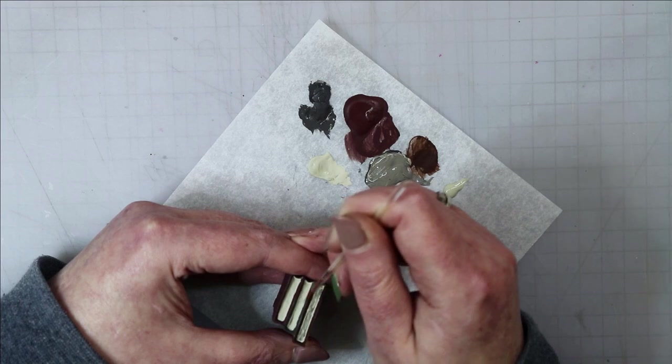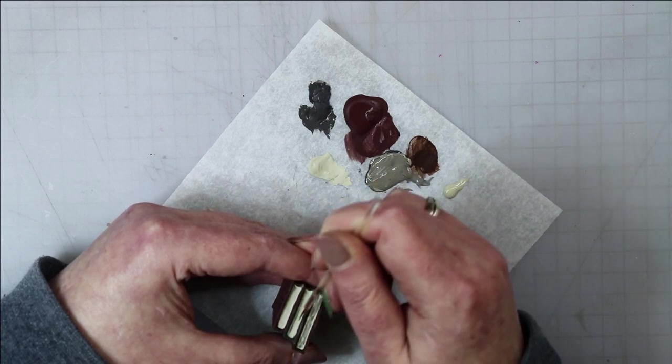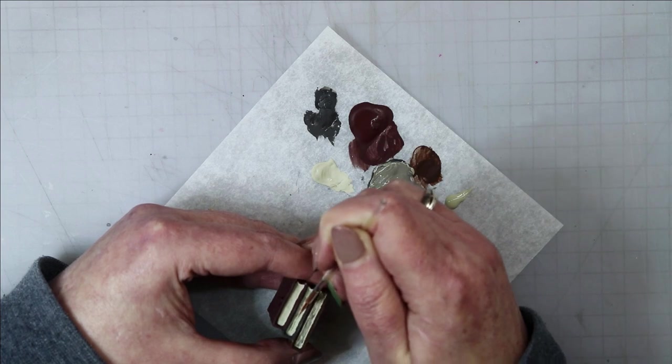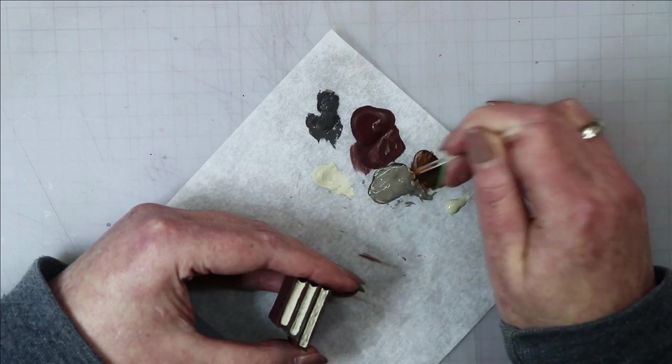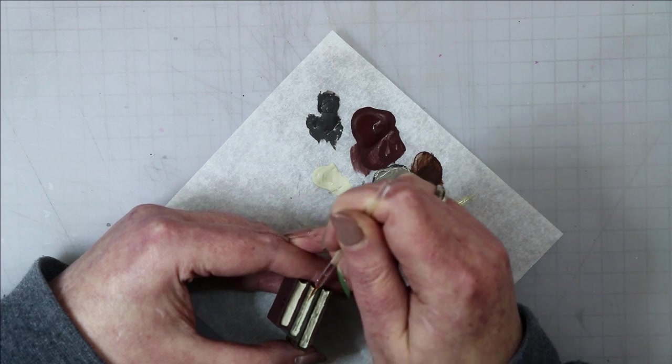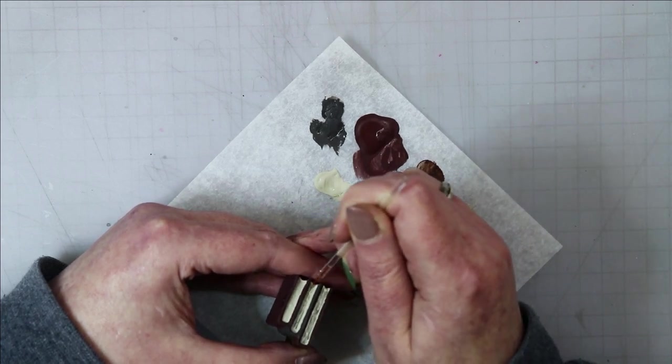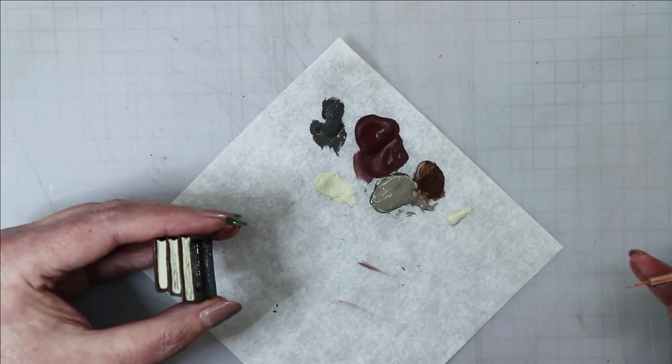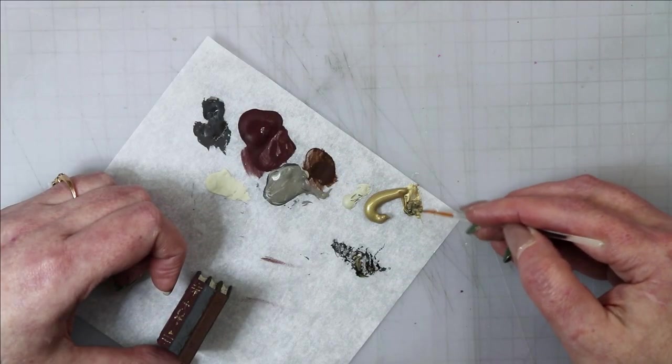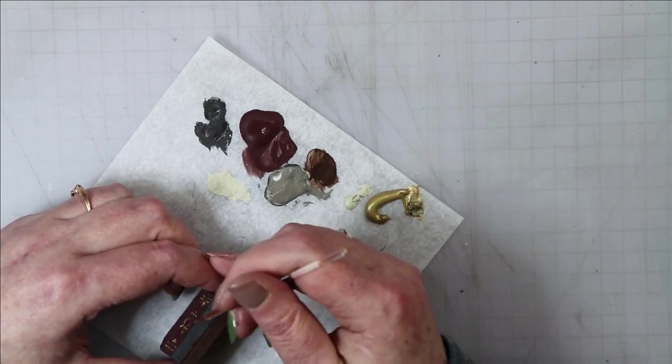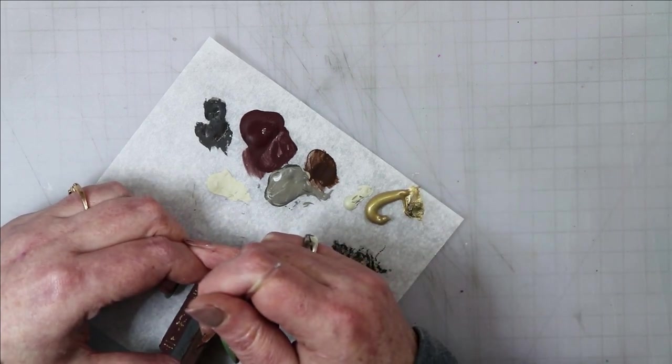Once the paint for the pages had dried I went back in with my cute little eyeliner brush and used a darker taupey color along with the original sand color that I used to paint in some lines to give that page texture that books have when you're looking at them. It's just an extra little detail to provide a little bit more realism.